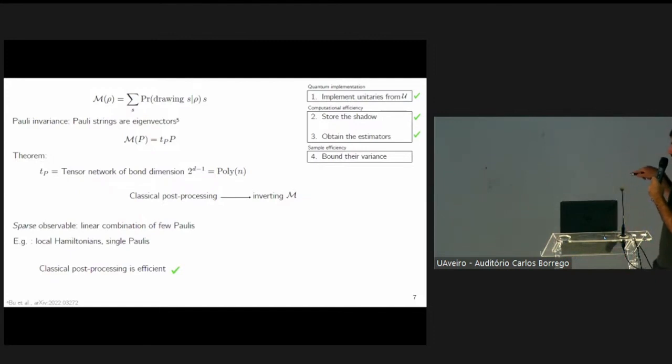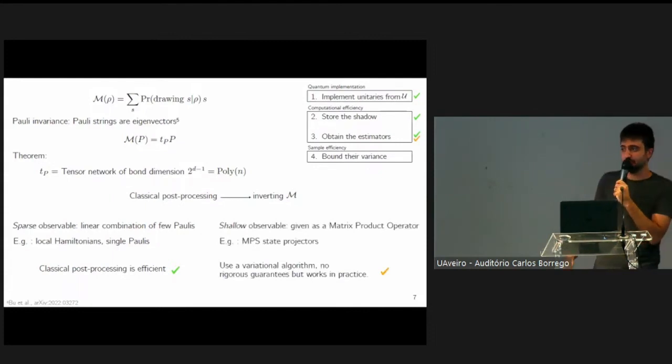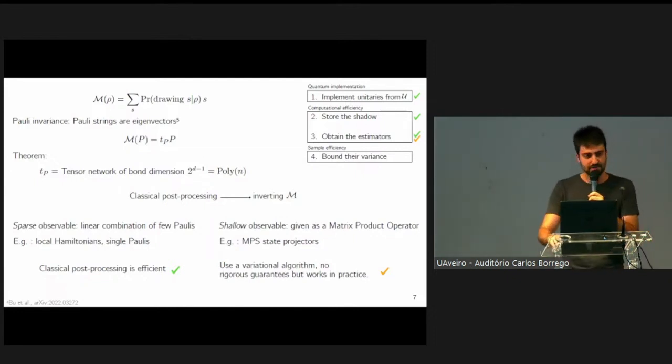We do this for two different classes of observables. First of all, we have sparse observables, which are linear combinations of a few Pauli operators, for example, local Hamiltonians. For this, we can do the classical post-processing efficiently. Then we have what we call shallow observables, which are observables given as matrix product operators, for example, if you want to estimate a state fidelity with an MPS target state. For this, we use a variational algorithm, for which unfortunately we have no rigorous guarantees, but we observe good results in practice. It's an open question to find rigorous guarantees for these kind of algorithms.